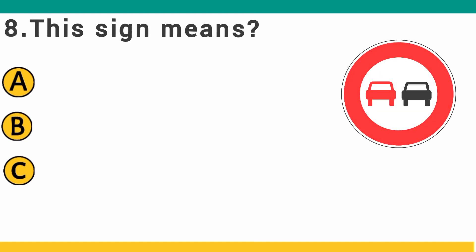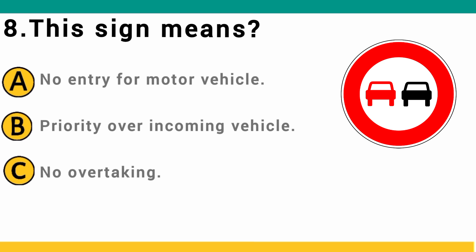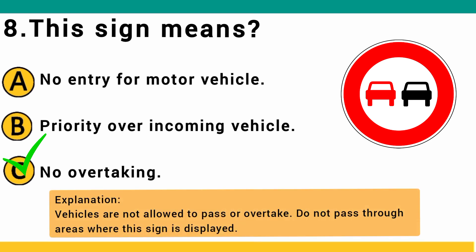This sign means: A) no entry for motor vehicle, B) priority over incoming vehicle, or C) no overtaking. The correct answer is C: no overtaking. Vehicles are not allowed to pass or overtake in areas where this sign is displayed.